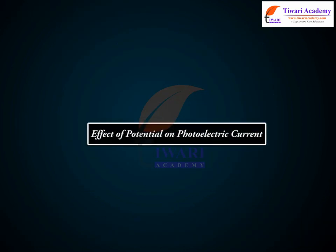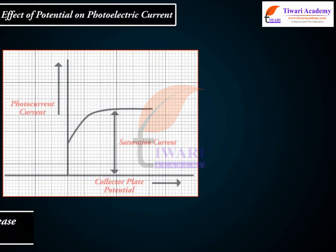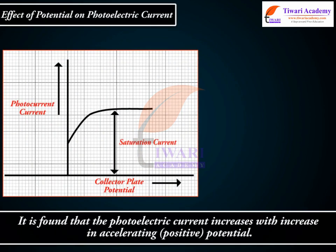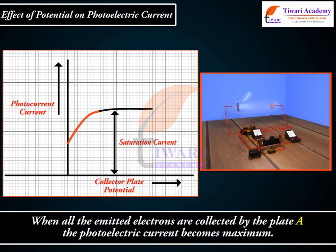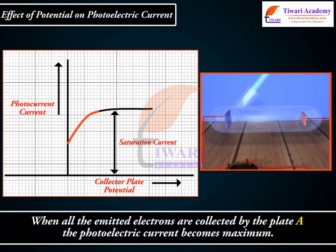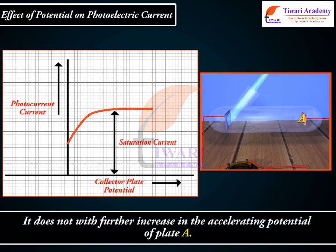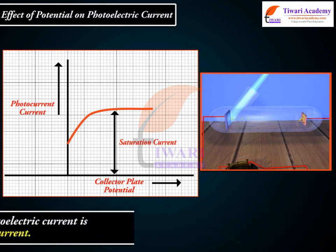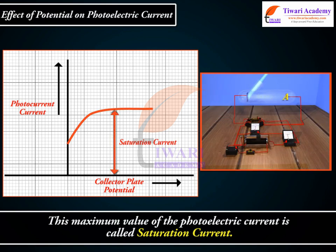Effect of potential on photoelectric current. It is found that the photoelectric current increases with increase in accelerating positive potential. When all the emitted electrons are collected by the plate A, the photoelectric current becomes maximum. It does not increase with further increase in the accelerating potential of plate A. This maximum value of the photoelectric current is called saturation current.